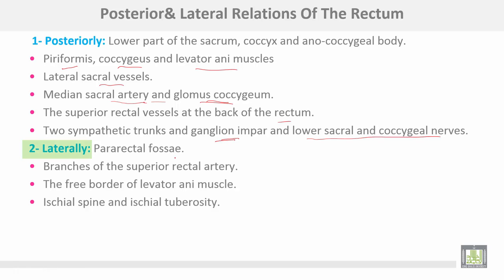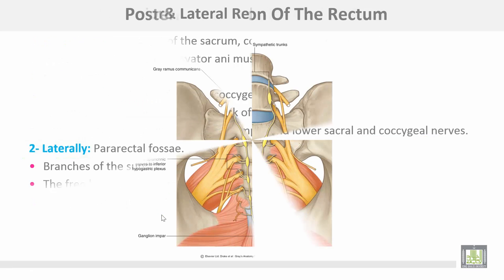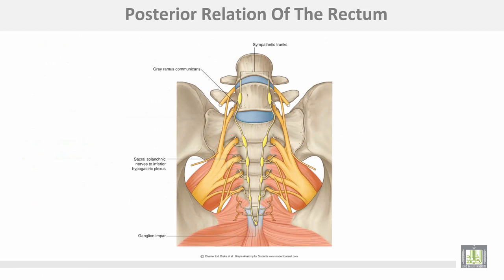Laterally: the pararectal fossae, branches of the superior rectal artery, the free border of levator ani, the ischial spine, and ischial tuberosity. This view is after removal of the rectum, showing the posterior relations — the sympathetic chain united downwards to form the ganglion impar, and the sacral nerves.